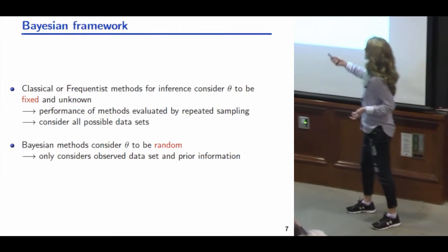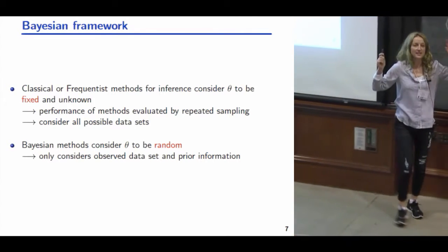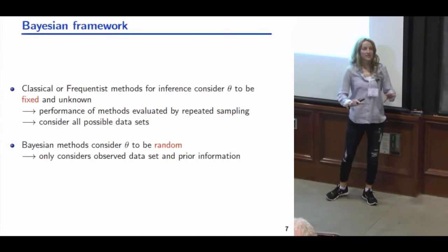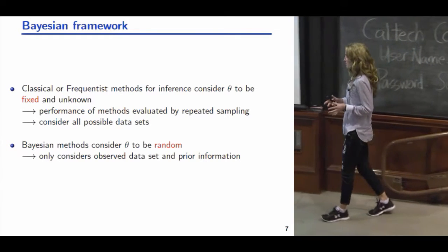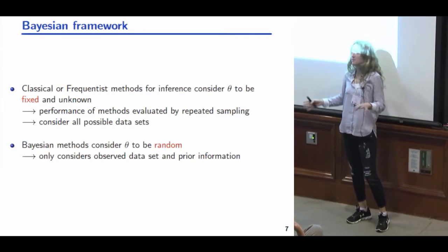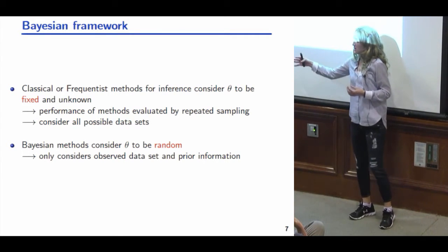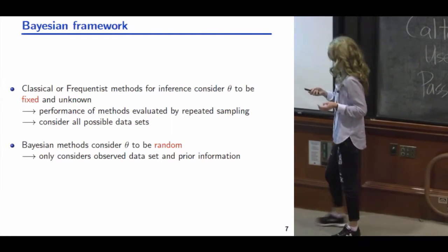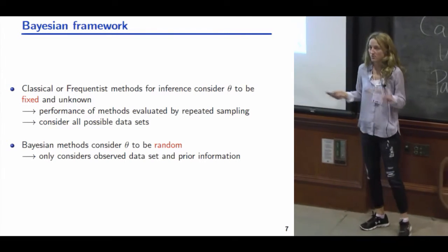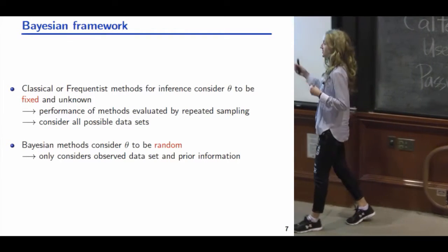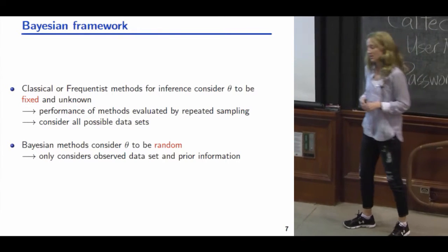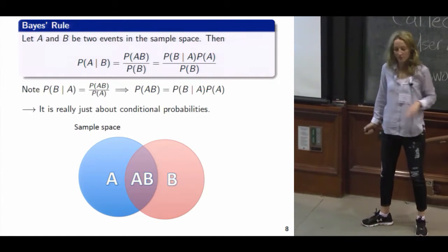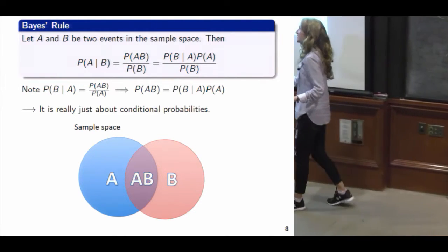Underlying frequentist methods is the notion of considering all possible data sets of size n. For Bayesian methods you only consider the data set that you have — inference is based on that data set, not additional ones. You have some prior understanding of your parameters, you put down your prior distribution, and then you ask: given this data set, how is my understanding of the uncertainty in the parameters updated? Sometimes you can get similar answers between the two types of methods, but their interpretation is always different.